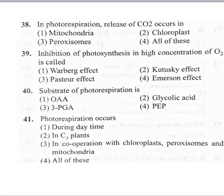Coming to the 39th question: inhibition of photosynthesis in high concentration of oxygen is called option 1 Warburg effect, option 2 Kottaskai effect, option 3 Pasteur effect, option 4 Emerson effect. Inhibition of photosynthesis in high concentration of oxygen is called the Warburg effect. So option 1, Warburg effect, is the right answer.